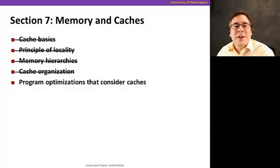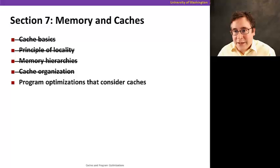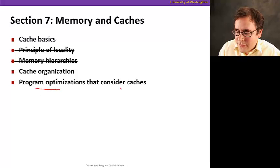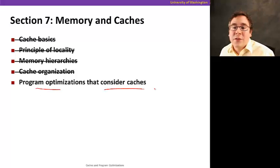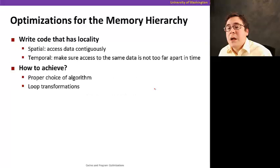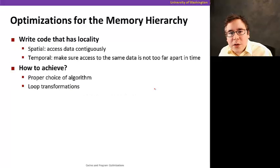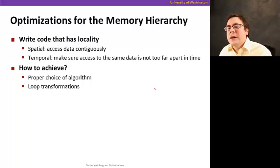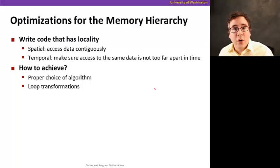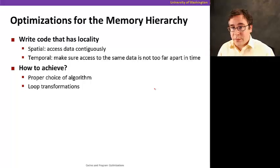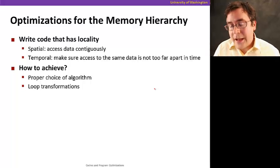Now we're going to do our last topic in our memory and caches section. We're going to talk about program optimizations that consider caches. Optimizing code for the memory hierarchy essentially boils down to writing code that has better locality properties.